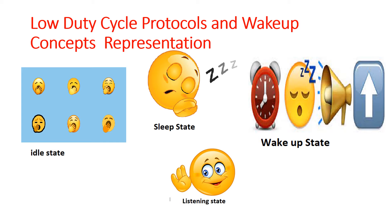When a node has no data to transmit or receive, it is in the idle state. The idle state consumes more energy. To avoid that, the node transitions to the sleep state. When the node wants to transmit or receive information, it moves to the wake-up state, and after that it listens for any packets to be received or transmitted.